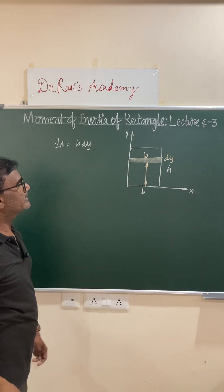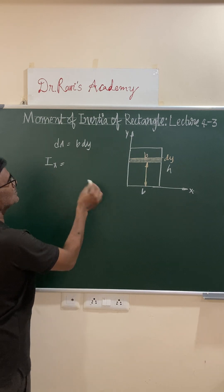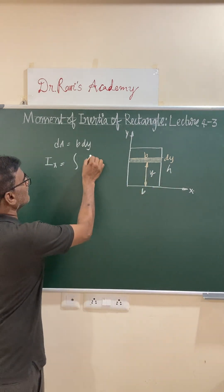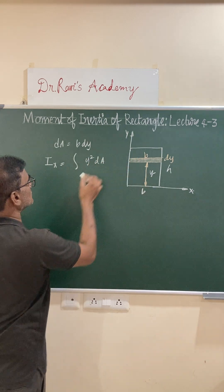b dy is the elemental area, and moment of inertia about the x-axis, Ix, is equal to the integral of y square dA, with the limits of integration 0 to h.